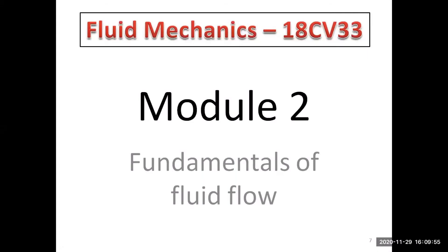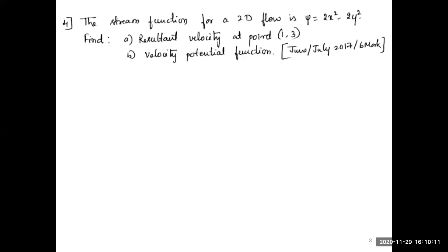Welcome back to the course Fluid Mechanics. In the previous class we solved one problem on potential function and stream function. Continuing from module 2, the problem is: the stream function for a fluid flow is ψ = 2x² − 2y². Find (a) the resultant velocity at point (1, 3), and (b) the velocity potential function. This was asked in June/July 2017 for 6 marks.